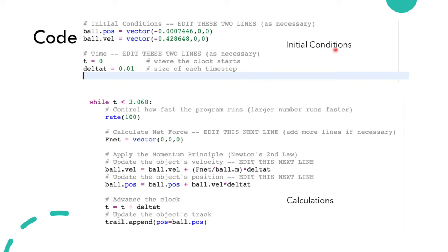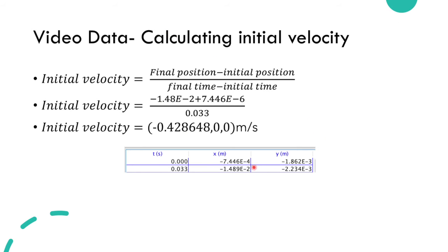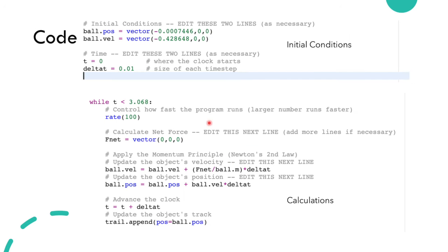In our code with the initial conditions, we set the position of the ball the same as the position that tracker is giving us, and for the velocity we also did the calculation that we showed before.